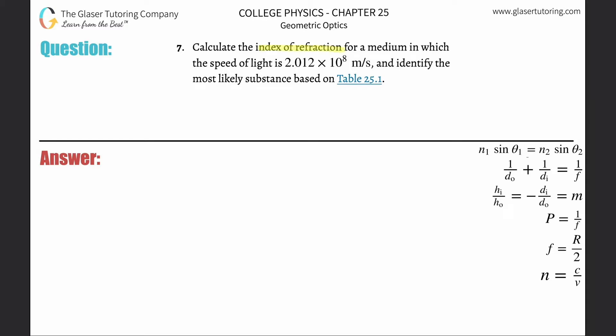Number seven, calculate the index of refraction for a medium in which the speed of light is 2.012 times 10 to the 8 meters per second and identify the substance.